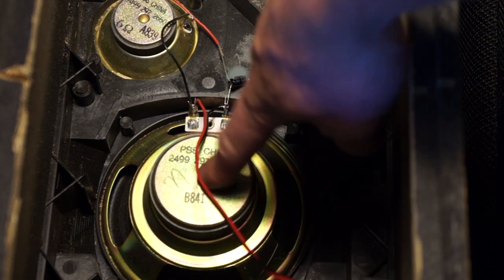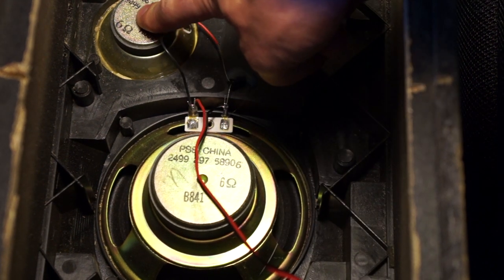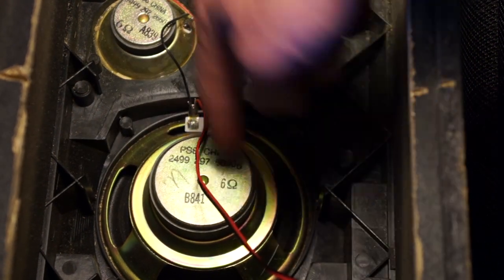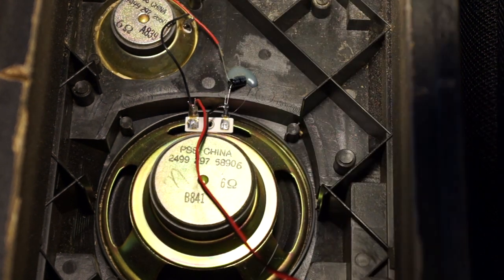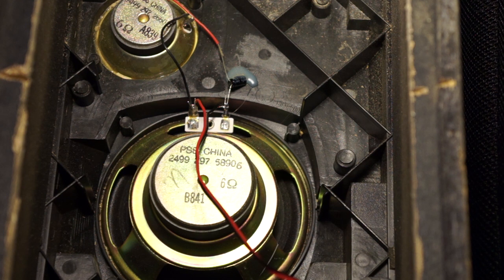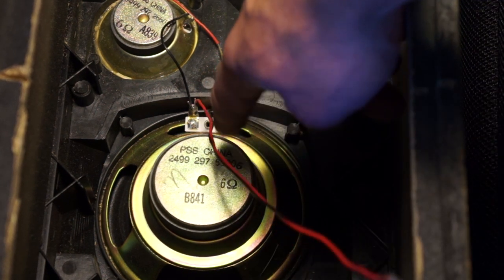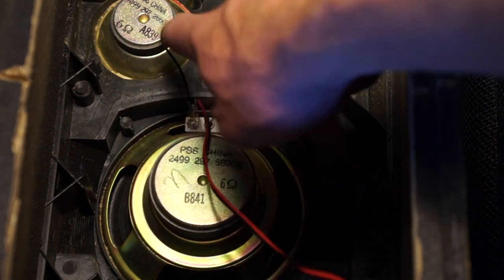Now looking inside the speaker, we have a low-frequency driver and a mid-range driver. You can think of them as bass and treble. If you look close, you can also see a capacitor right here. What that does is it acts as a high-pass filter in the speaker, so when signal comes in from the stereo, all the frequencies hit the low-frequency driver.